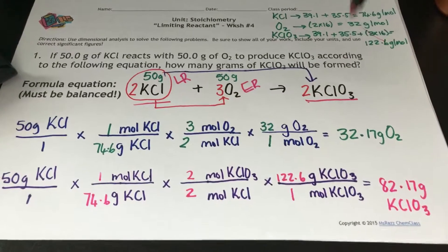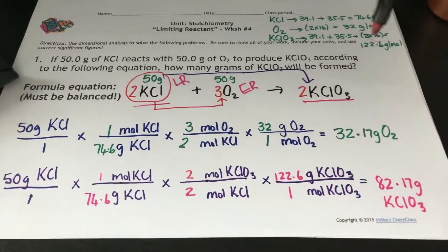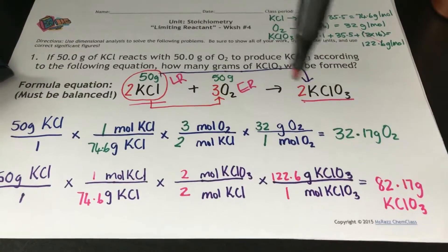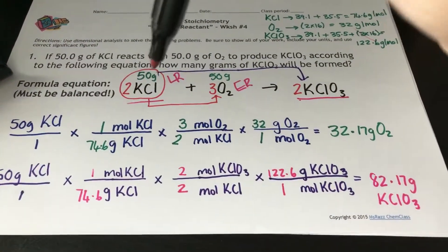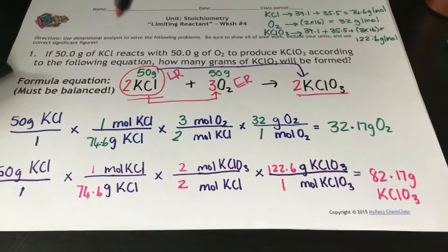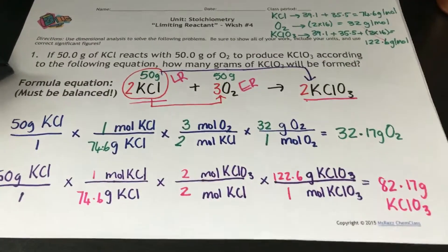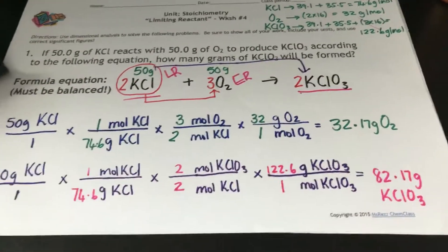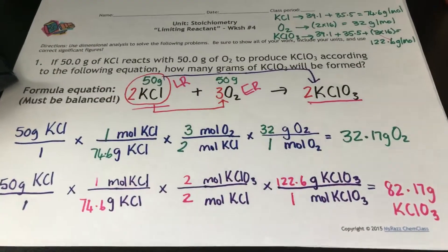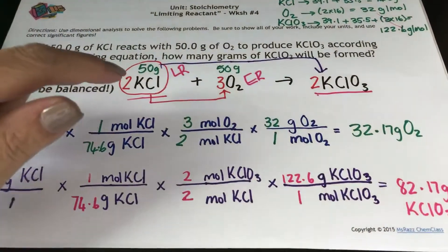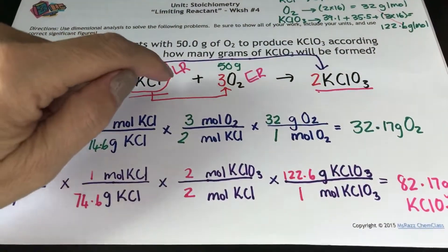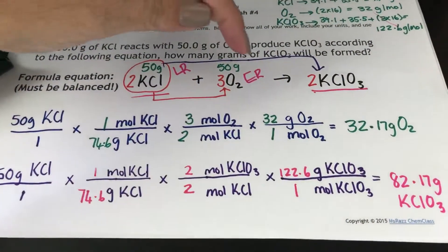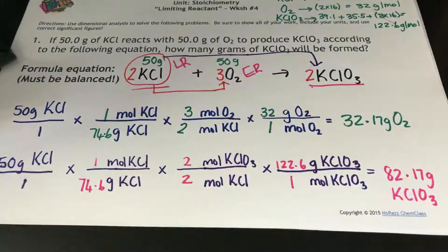Just like we did with the batches of biscuits — we first looked at which ingredient got used up first by comparing, then we identified the limiting reactant. The limiting reactant determines how much product you get. Because I only had six eggs I could only form two batches of biscuits. Similarly, because I only have 50 grams of potassium chlorate and it's the one that gets used up first, I can use it to find out how much product is going to form.